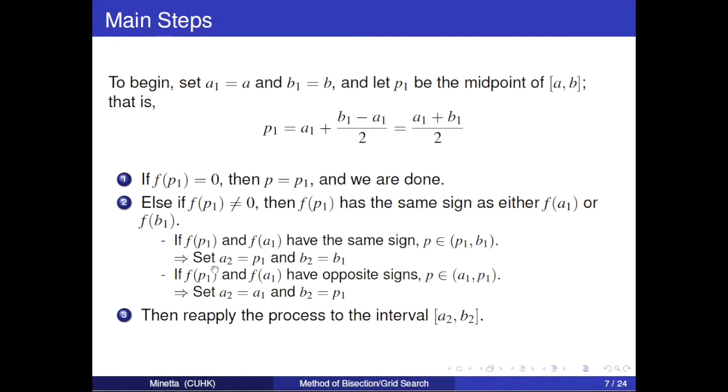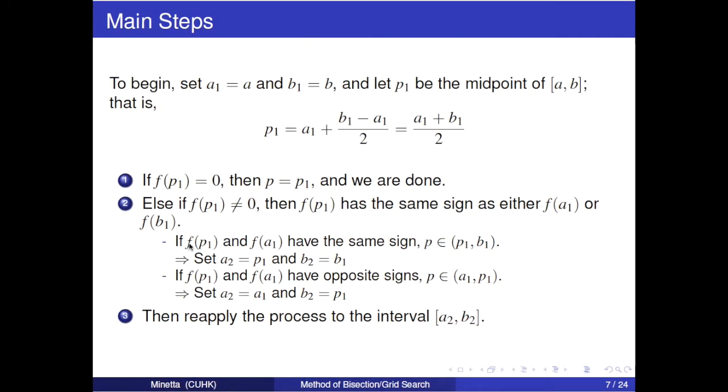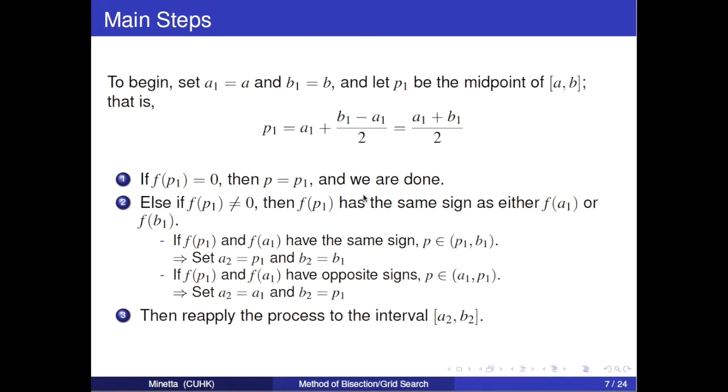Else if f(p1) does not equal zero, then there will be two situations. If f(p1) and f(a1) have the same sign, then the value p we want will be in interval [p1, b1]. Hence, we set a2 equals p1 and b2 equals b1. Similarly, we set a2 equals a1 and b2 equals p1. Here now, we finish the first process, then we apply the process to the interval [a2, b2]. At last, we can get the value p we want.